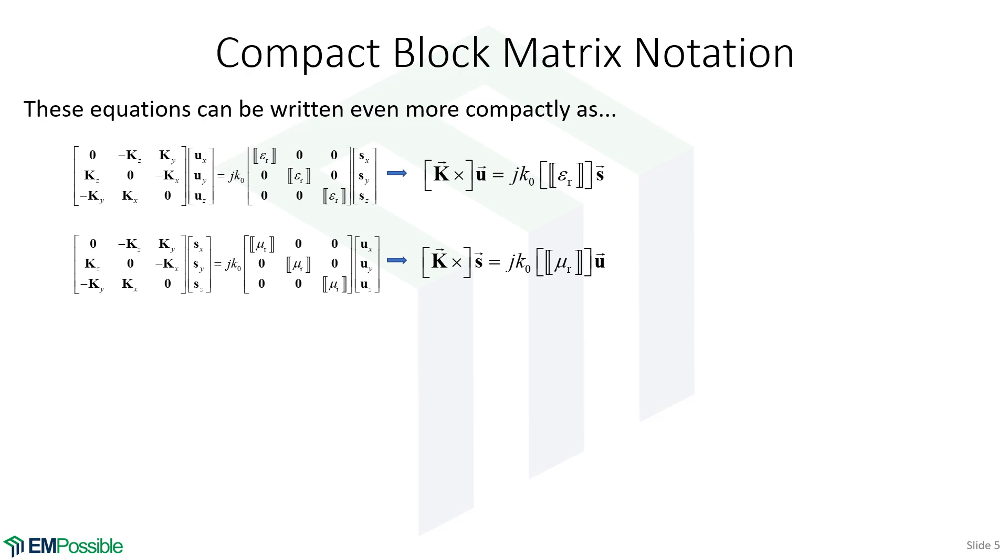We can do this in a more compact form, recognizing this really is doing a cross product. Let's just write it as K cross. Over here is our permittivity tensor and our permeability tensor. And this is our U vector and our S vector. I'm mixing the words vector here. We have vector in the math sense of having a column of numbers, and then we have a spatial vector in the sense of having X, Y, and Z. It is an X, Y, Z vector of a bunch of column vectors. And these are our convolution tensors now.